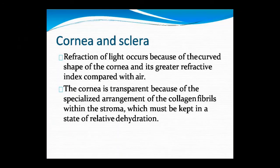The cornea and sclera provide light refraction because of the cornea's curved shape and its high refractive index relative to air. The cornea is transparent because of its specially arranged collagen fibrils in the stroma, which maintain a relative dehydrated state allowing light to pass through.